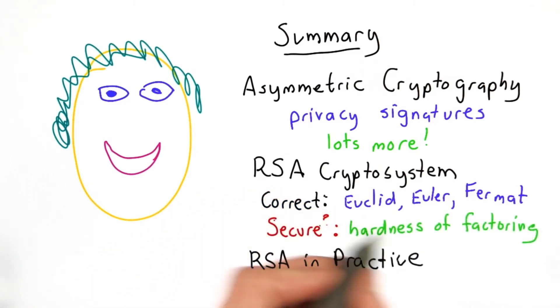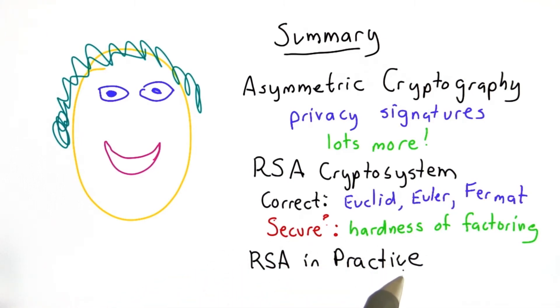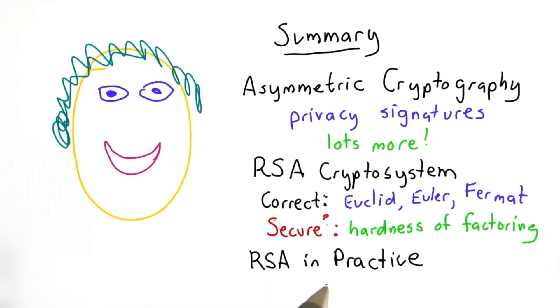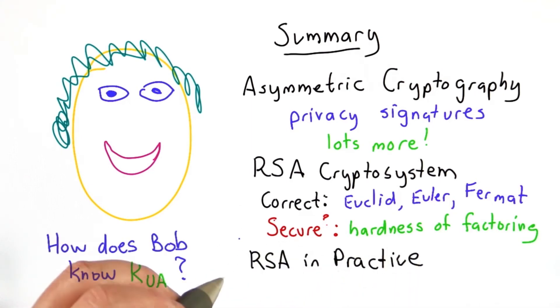Then we talked about some issues in using RSA in practice: the dangers of encrypting small messages, or messages from a small set of known messages, and solutions to that based on using random padding.